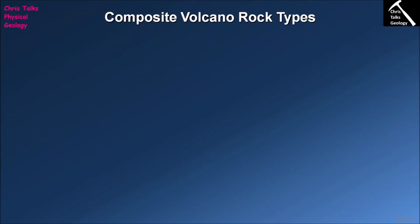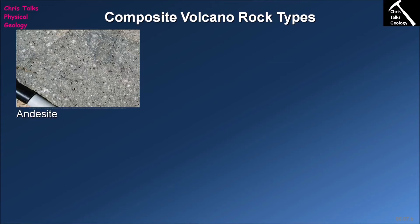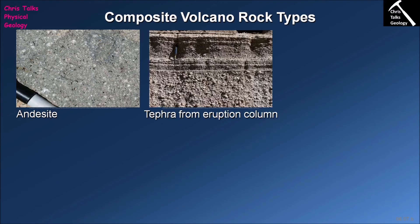What kinds of rocks are commonly associated with composite volcanoes? One of the most common types is andesite — a volcanic intermediate rock produced by the cooling of intermediate lava flows. We also see large amounts of tephra deposited. Tephra is the material that makes up the eruption column, and as shown here it comes in a range of sizes — from very fine dust all the way up to particles a few centimetres in size, which are referred to as lapilli.